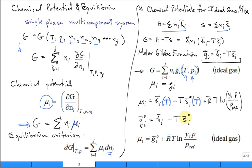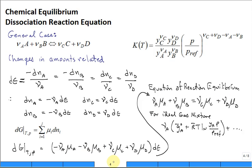Expanding the molar Gibbs function or chemical potential: H for an ideal gas is only a function of T, not T and P. The entropy S̄° (at one ATM standard pressure) is only a function of T. The last term involves temperature and partial pressure, which is P times yᵢ (the mole fraction). So the chemical potential is a function of temperature, pressure, and mole fraction. You can introduce the molar Gibbs function at standard conditions where yᵢ times P equals one ATM, giving a compact form: chemical potential equals molar Gibbs function at one ATM plus an additional term involving R̄T·ln(yᵢ·P/P_ref).